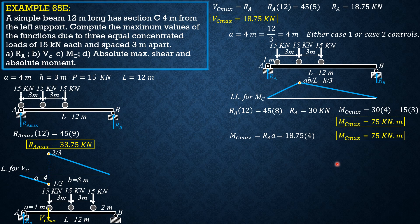For absolute maximum shear, it is either the reaction at the left or right support. It equals RA max, just as computed earlier, so the absolute maximum shear is 33.75 kilonewtons.